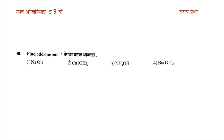Now the next question is find the odd one out. The options are: NaOH — sodium hydroxide, Ca(OH)2 — calcium hydroxide, NH4OH — ammonium hydroxide, and Ba(OH)2. The answer is NaOH — sodium hydroxide.